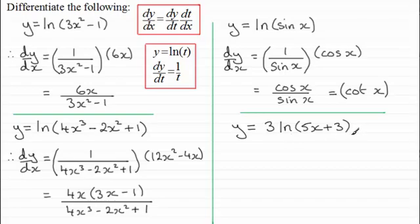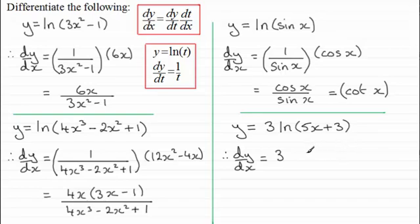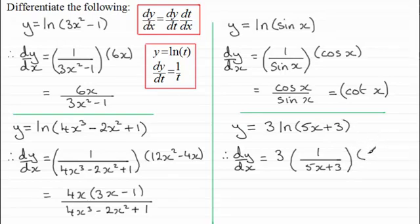In this last example I've put a number in the front. The constant in front of the natural log of 5x plus 3 is going to remain there. So dy/dx equals 3 times the differential of ln(5x plus 3). Letting t equal 5x plus 3, dy/dt is 1 over t — so 1 over (5x plus 3) — and dt/dx is 5. Putting it all together: 3 times 1 times 5 gives 15, all divided by (5x plus 3).